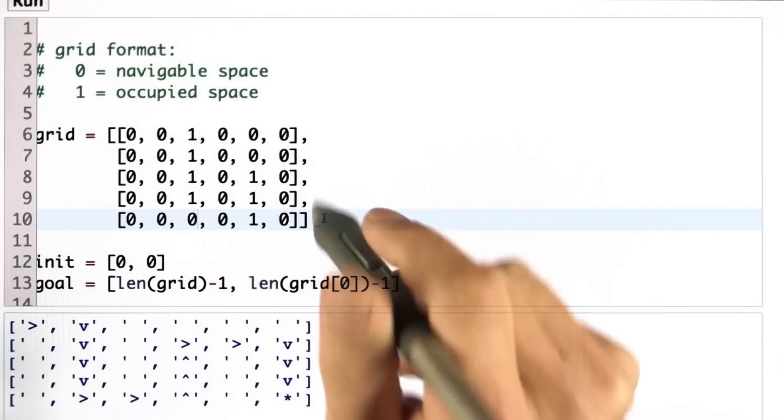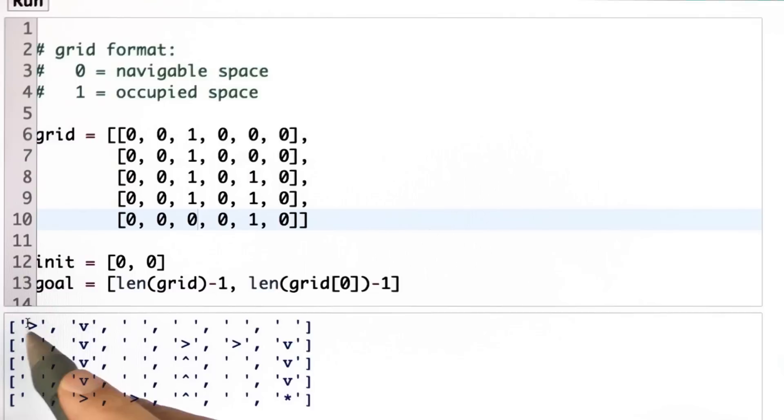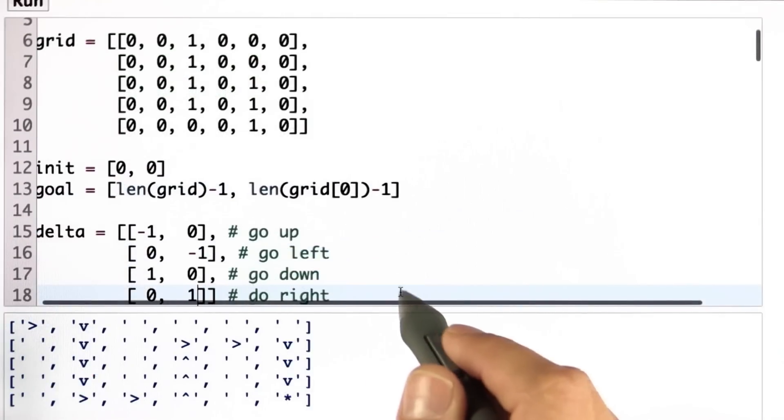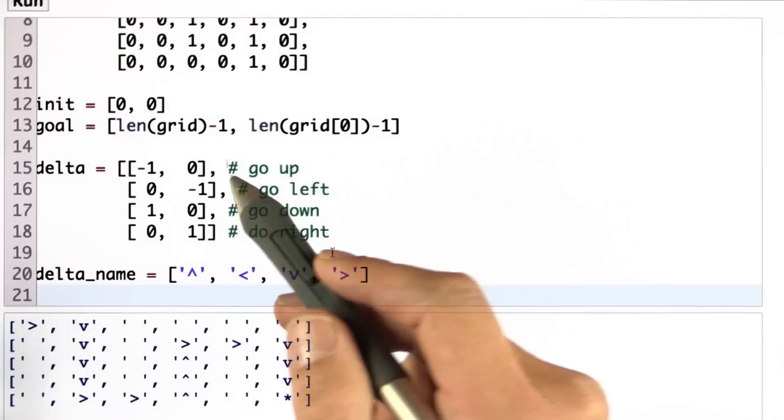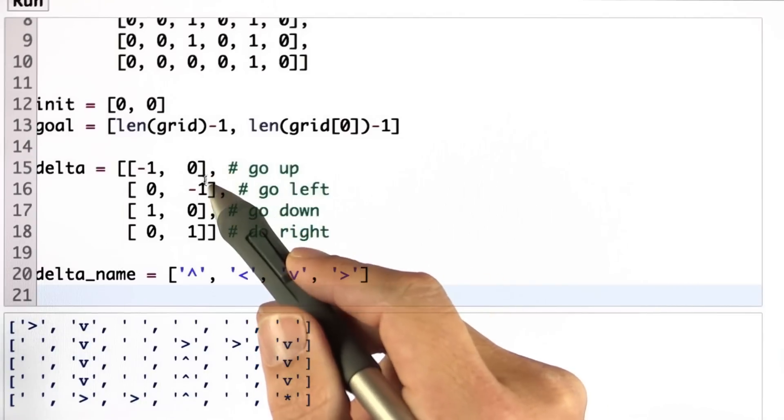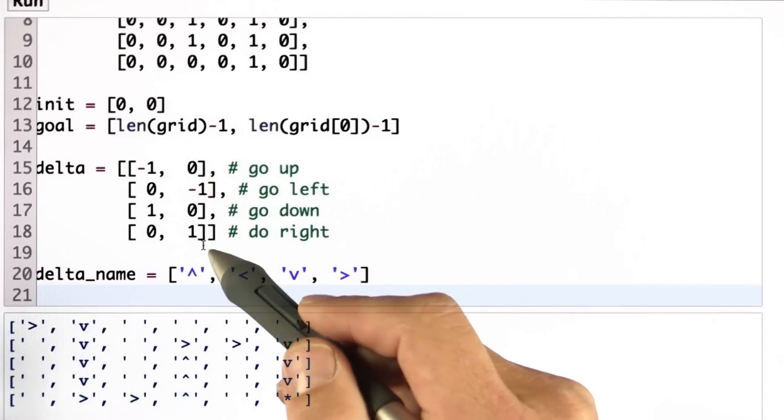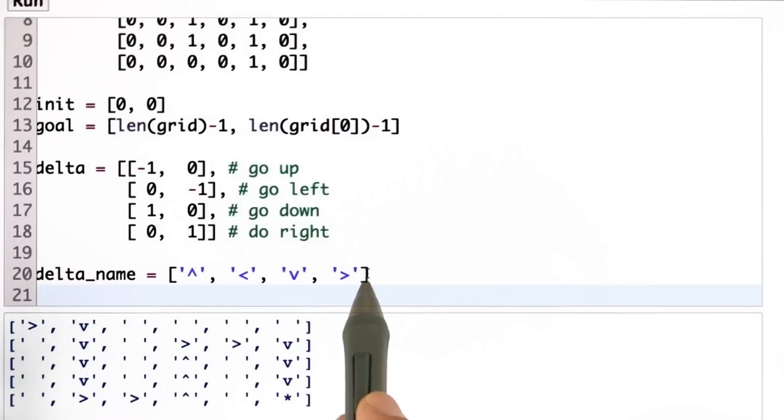You should write for me a piece of software that outputs this specific thing. Part of this is the delta_name that I kind of brushed over before. These four symbols are used to indicate arrows to the top, left, down, and right, and they correspond to the four actions: go up, left, down, and right. So use those to print out the table.